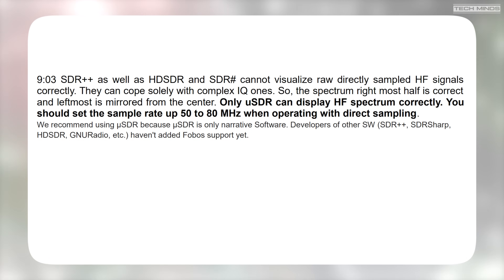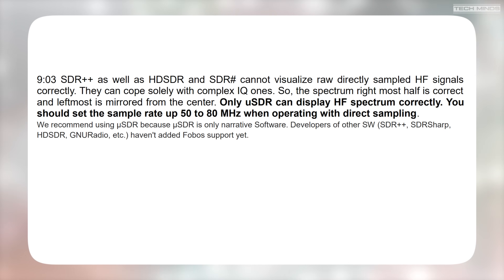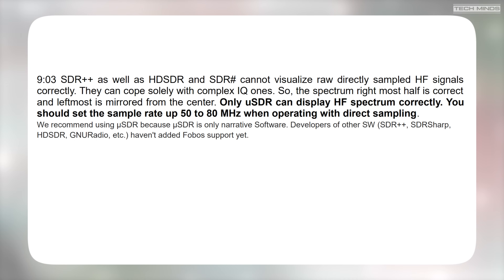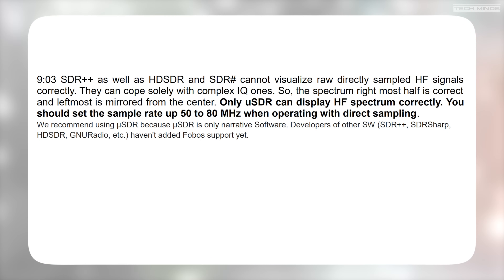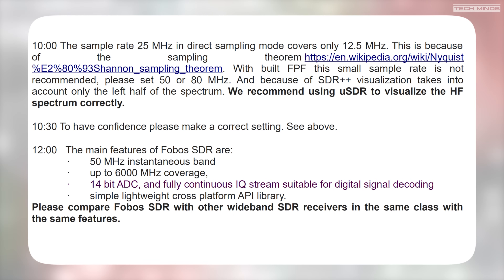Currently SDR++, HDSDR, and SDR# cannot visualize raw directly sampled HF signals correctly. This is why we're seeing mirror signals when viewing the full HF band, even with higher sample rates. I think it would be wise for RigExpert to only suggest the use of uSDR if it is currently the only software which displays the spectrum correctly, otherwise other users will do what I've done with other SDR applications. There is additional information in the email, mostly duplicates of what was said - you can pause the video to read each slide.